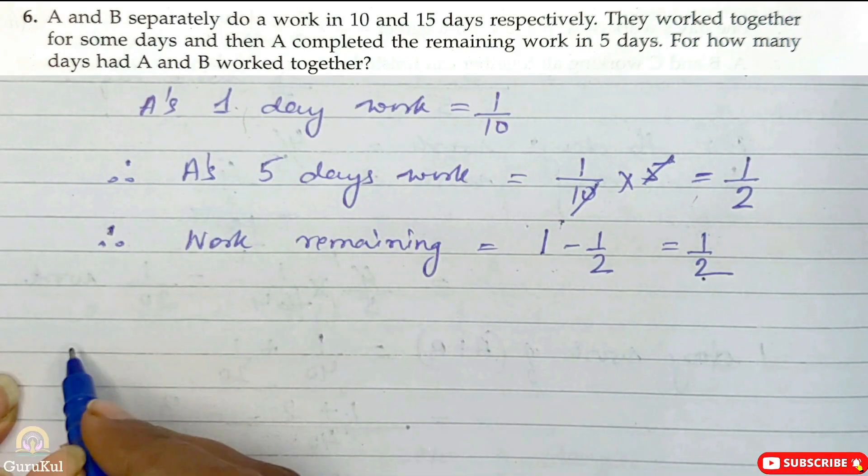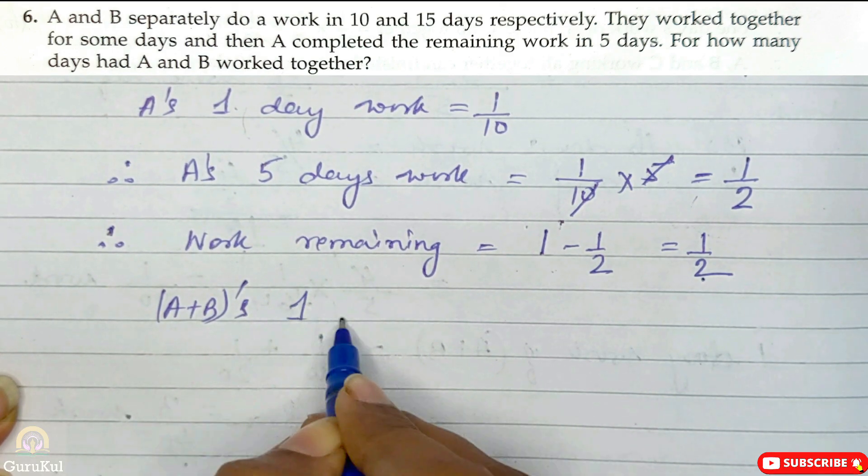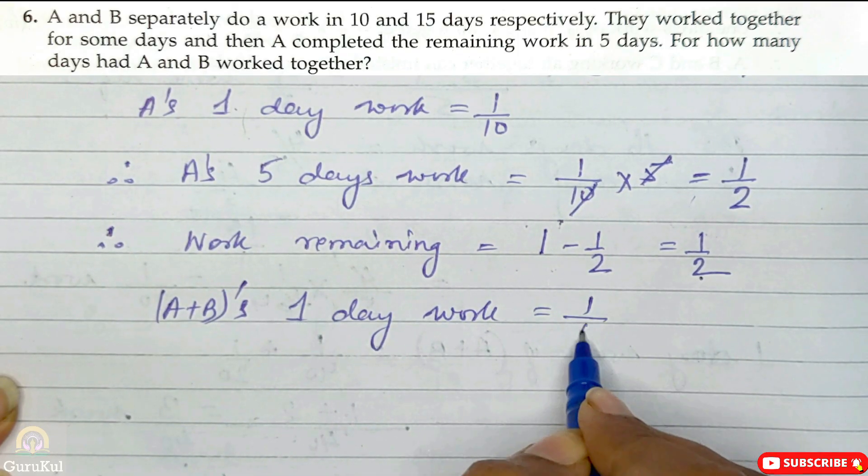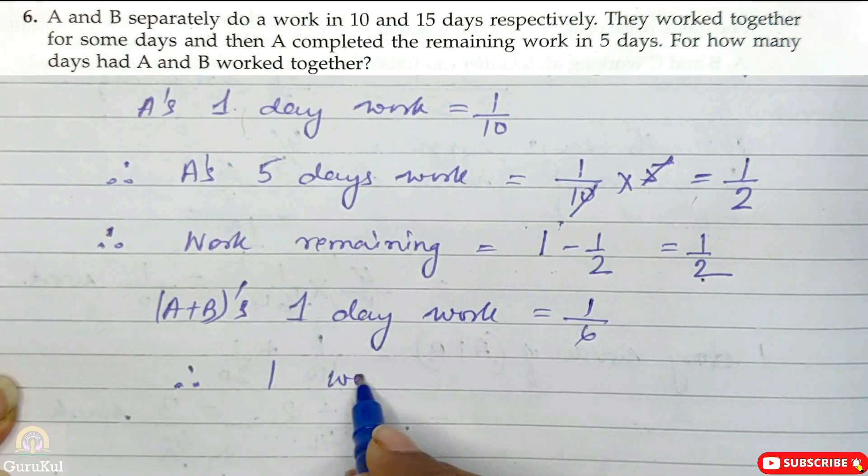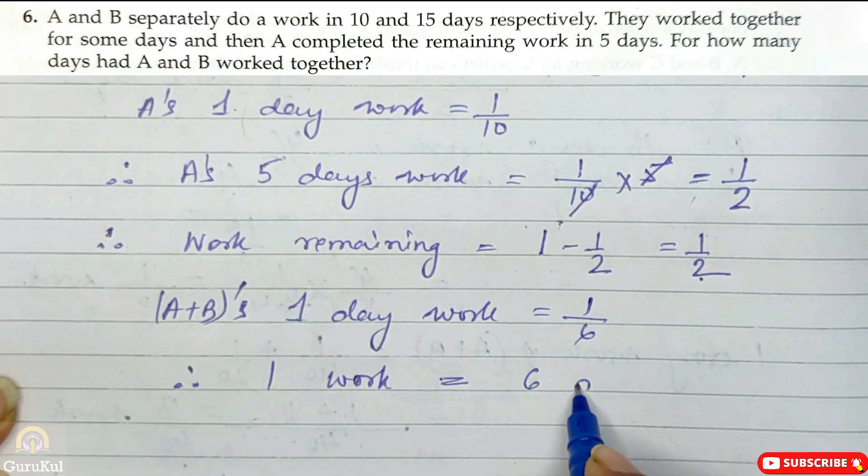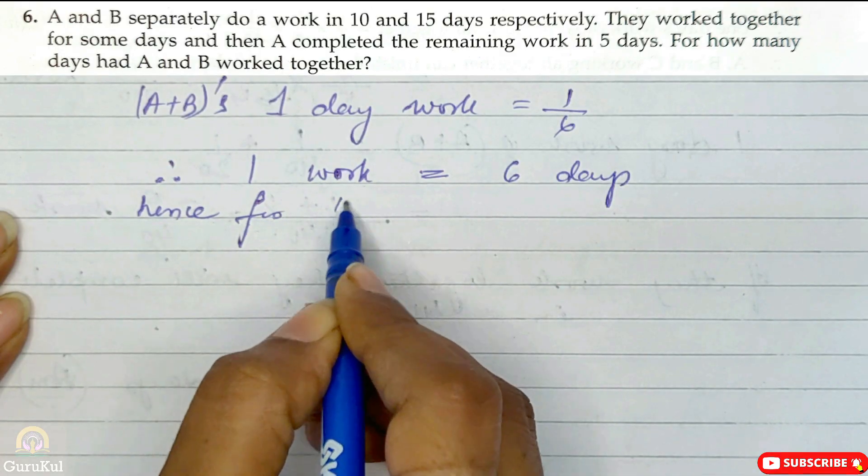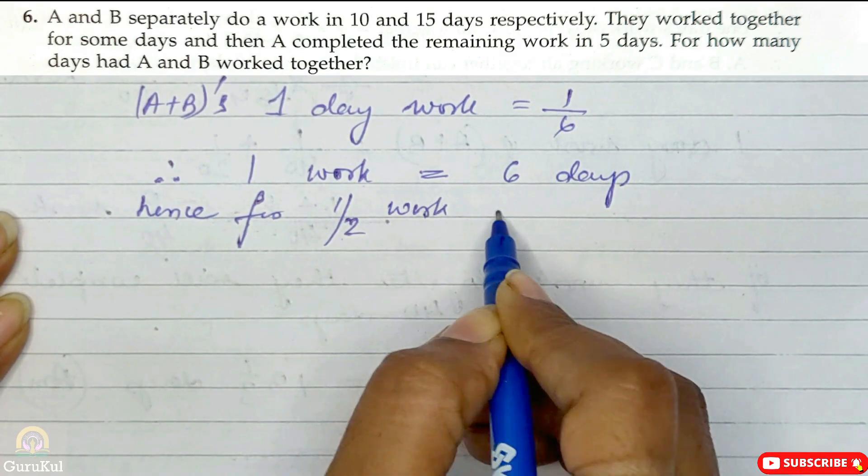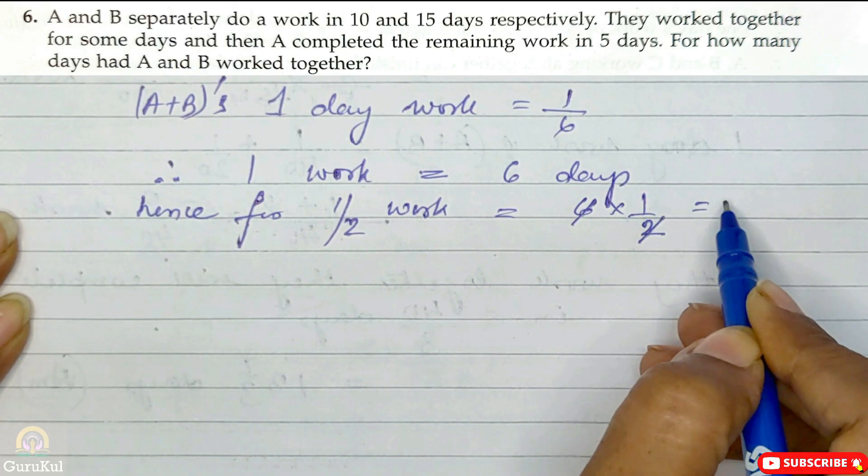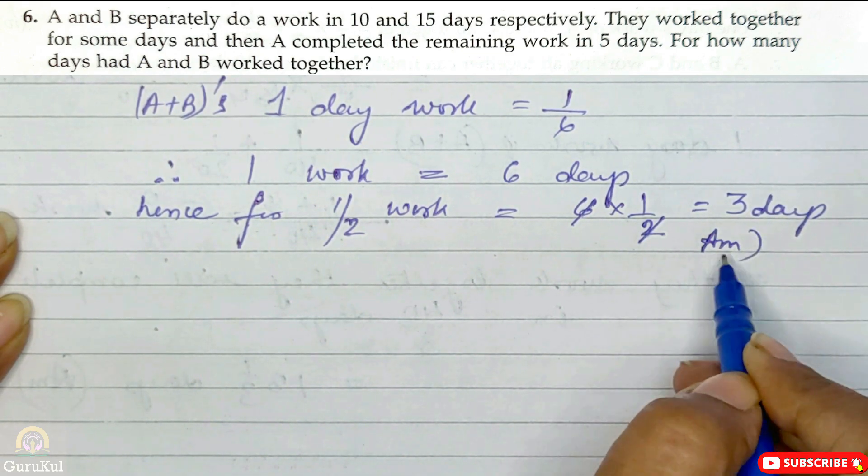Now A plus B one day work is equal to 1 by 6. Therefore to complete one work it takes reciprocal, which will be 6 days. Hence for 1 by 2 work, that will be 6 into 1 by 2. After reducing, we got the answer 3 days. And this is the answer.